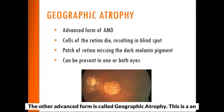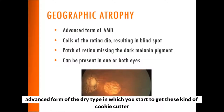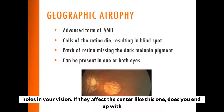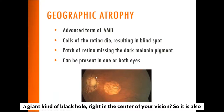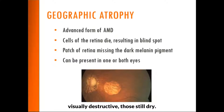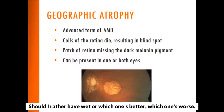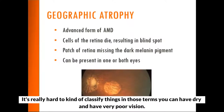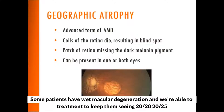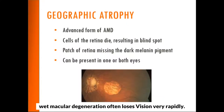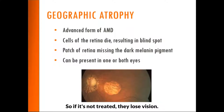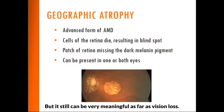The other advanced form is called geographic atrophy. This is an advanced form of the dry type in which you get these cookie-cutter holes in your vision. If they affect the center, you end up with a giant black hole right in the center of your vision, so it is also visually destructive, though still dry. Sometimes people ask which is better or worse — wet or dry — but it's really hard to classify. You can have dry and have very poor vision. Some patients have wet macular degeneration and with treatment we can keep them seeing 20/20. Geographic atrophy is a slower process but can still be very meaningful as far as vision loss.